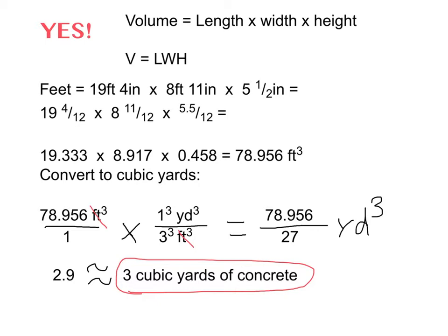4/12 as a decimal is 1/3 or 0.333 repeating. So 19 and 4/12 as a decimal is 19.333. 8 and 11/12, we have 8 and then 11 divided by 12 is 0.917. And then 5.5 divided by 12 is 0.458. So when you multiply all of those you get 78.956 cubic feet.